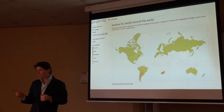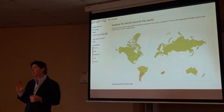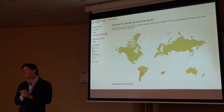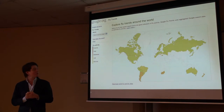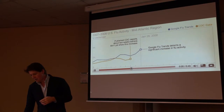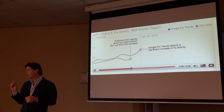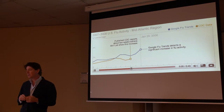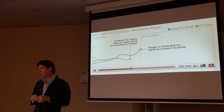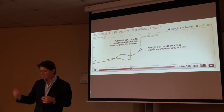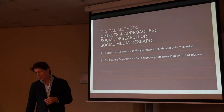The seminal piece of work in digital methods — and this is also important for big data — was Google Flu Trends. Its biggest claim to fame was that it was able to predict the incidence and location of flu prior to traditional surveillance regimes from the Center for Disease Control, in this particular instance in Atlanta. This has since been exported around the world, same with dengue fever.